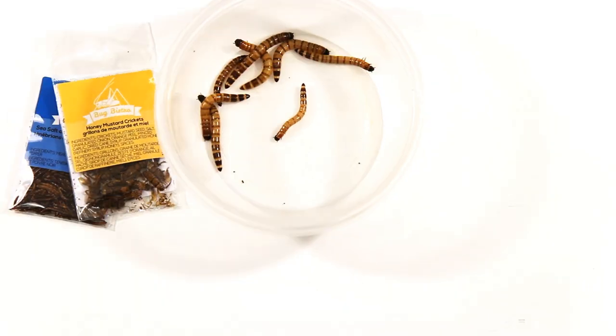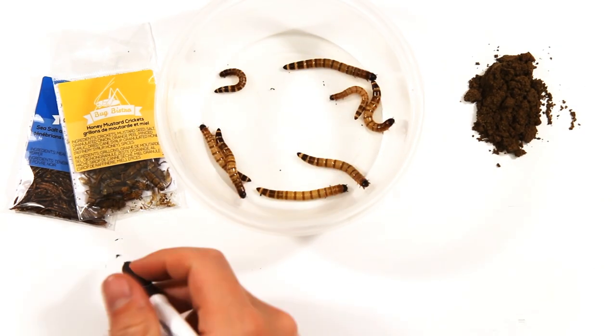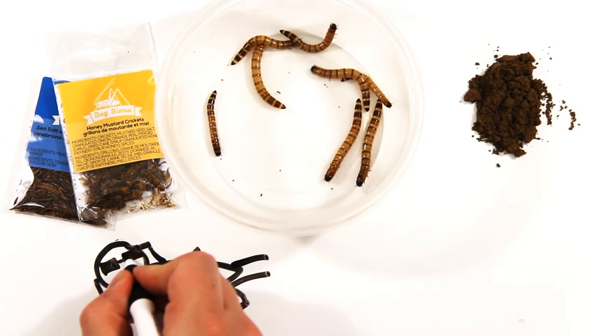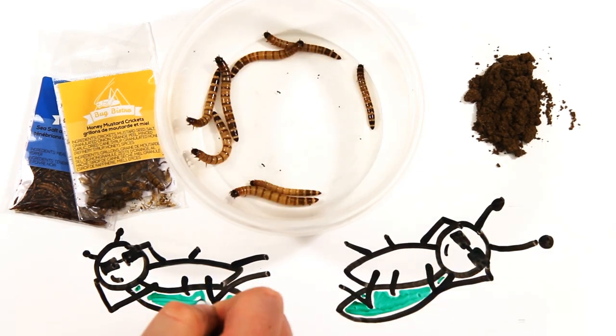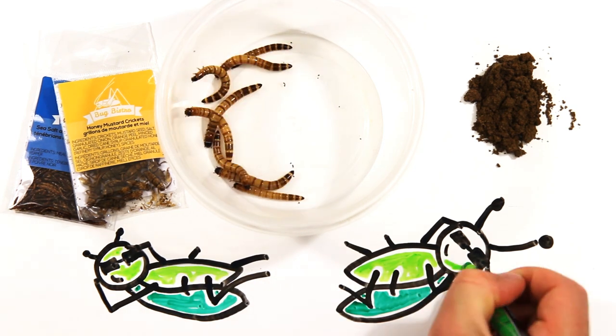But while the idea of eating insects may literally be hard to swallow, as recipes are created, insect processing food technology evolves, and our mindsets adapt, maybe insects will become the superfood of the future. Look out Greek yogurt and kale, there are some new kids in town.